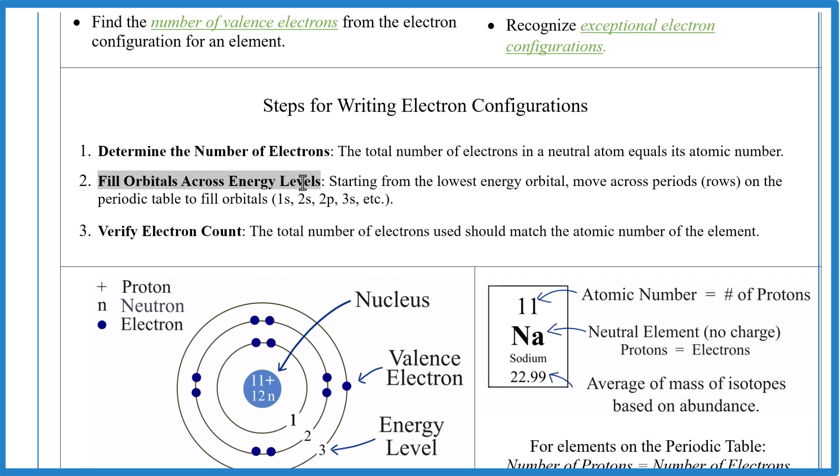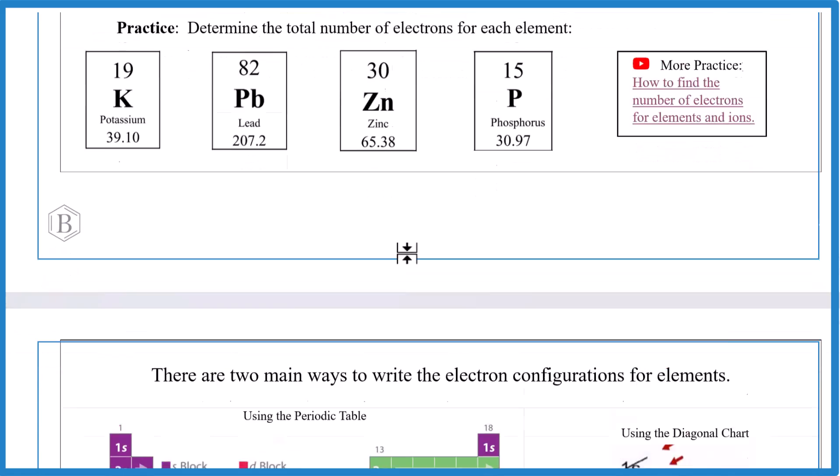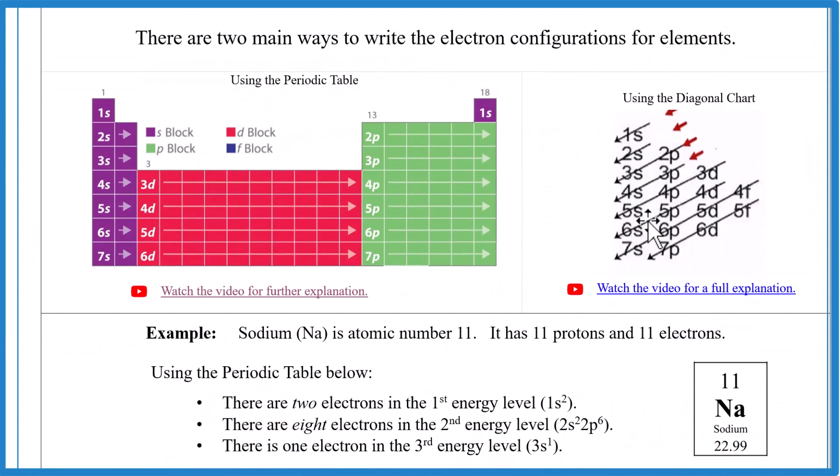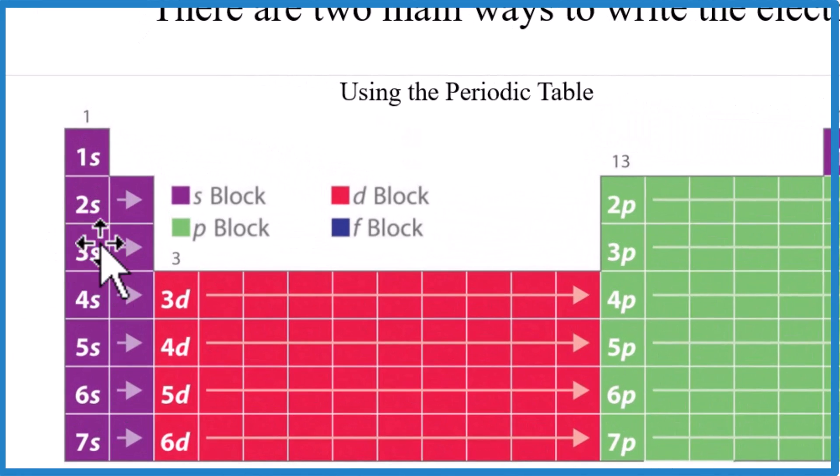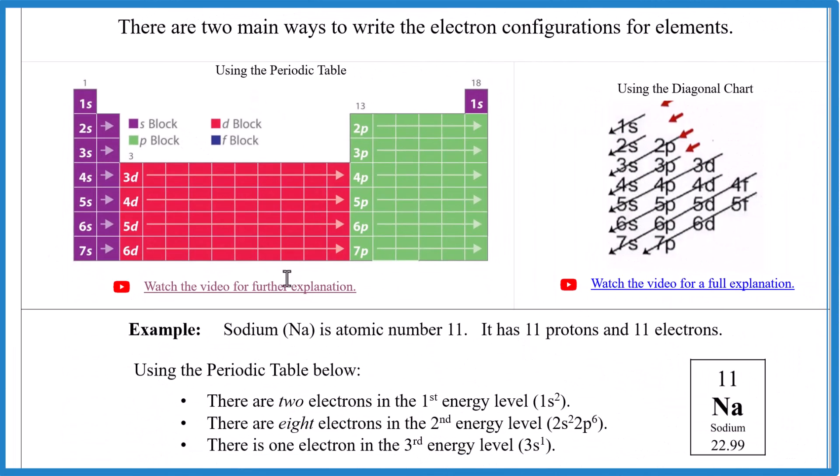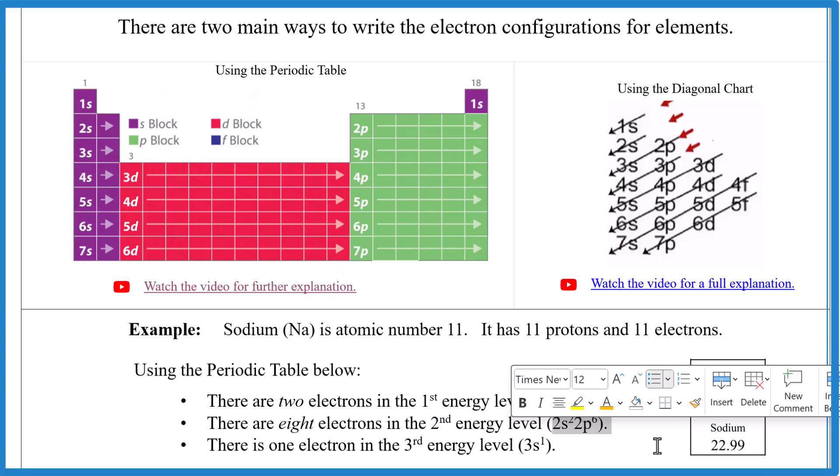So now we want to fill those orbitals across the energy levels. And we did that already, but let's work on that some more. There are two ways you can do this. You can use the method we just used, or you can use the diagonal chart, which is kind of confusing if you ask me. This lays it out real nice. There are videos here for both if you need further explanation. So when we look at sodium, it's right here on the periodic table. I can immediately tell it's going to end in 3s1. I already know that just from where it's positioned. You can't do that with the diagonal table. So I have my 1s1, 1s2. That's the first energy level. 2s1, 2s2. And then we do our 2p1 through 6. That's the second energy level. And we're going to end up right here at sodium, which is 3s1.